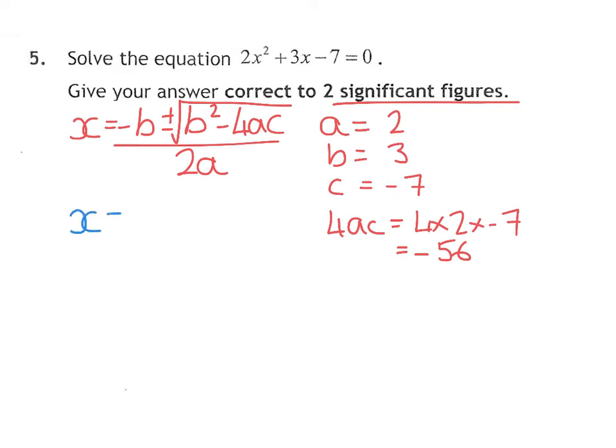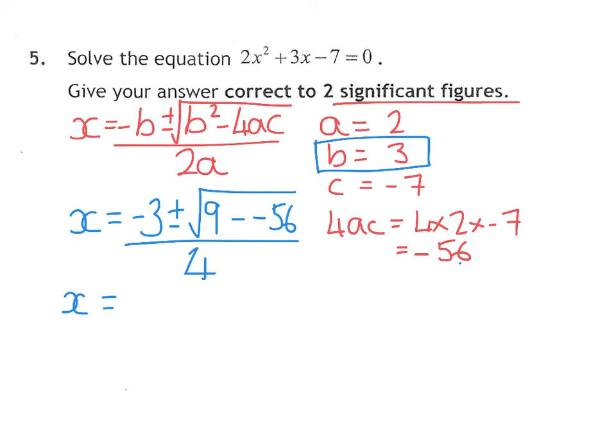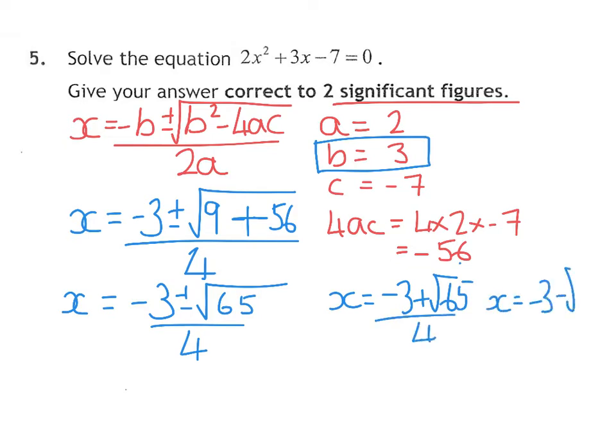When we sub in, we have X equals minus B is the opposite of whatever you've written, so that's minus 3 plus or minus the square root of B squared is 3 squared, which is 9, take away 4AC is negative 56 all over 2 times A, so 2 times 2 is 4. The reason I do the 4AC is it makes that bit under the square root nicer. You see the minus minus turning into a plus. 9 plus 56 gives us 65 all over 4.